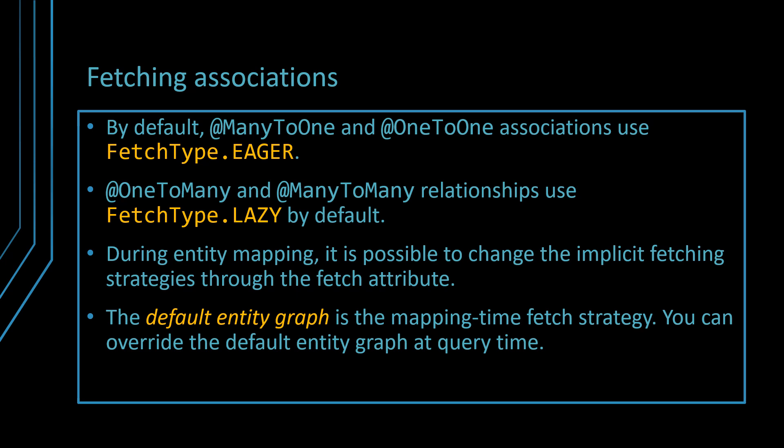During entity mapping, it is possible to override the implicit fetching strategies through the fetch association attribute, and combining the implicit fetching strategies with the explicitly declared ones, the default entity graph is formed. These default fetching strategies are a consequence of conforming to the Java persistence specification. Prior to JPA, Hibernate would fetch every association lazily, even many-to-one and one-to-one relationships. Just because the JPA 1.0 specification says that many-to-one and one-to-one must be fetched eagerly, it does not mean that this is the right thing to do, especially in a high-performance data access layer.